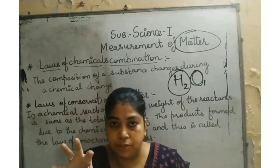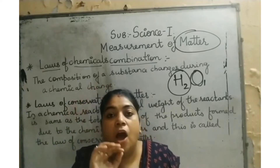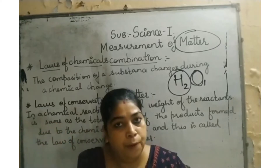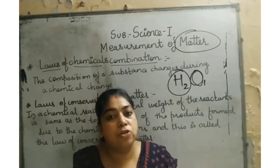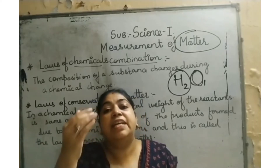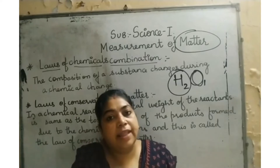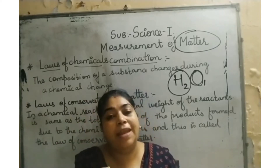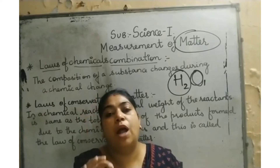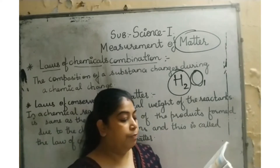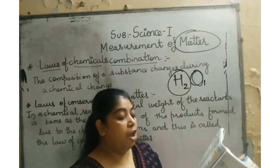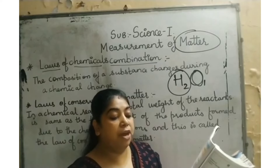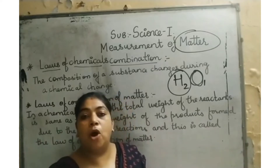Scientists Dalton, Thomson, and Rutherford studied the structure of substances and atoms and discovered the law of chemical combination. According to Bohr's theory, the outermost orbit should have 8 electrons; if there are 8 electrons, the element is stable. Otherwise it has valency — it seeks other elements, combines with them, and becomes stable. Chemical combination mainly depends on the outermost orbit, which defines the structure of an atom.